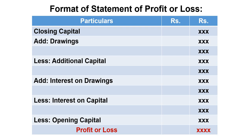Closing capital is listed first. For example, if opening capital is 2 lakhs and closing capital is 2.5 lakhs, closing capital minus opening capital gives 50,000 profit. Adjustments include: Drawings added, additional capital introduced is deducted, interest on drawings added, and interest on capital deducted.